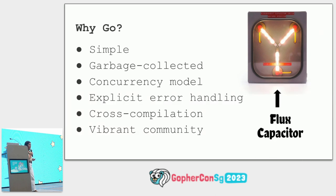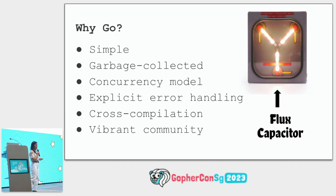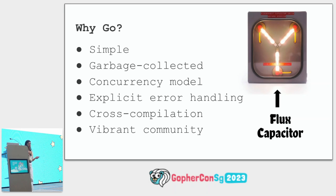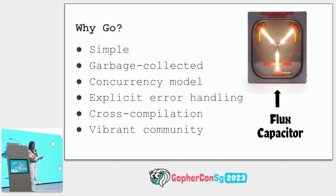Another reason to use Go is that it's a garbage-collected language, which means one less thing to worry about — you don't necessarily need to worry about memory management. Also, the concurrency model is very simple compared to other languages; a lot of complexity is abstracted out with goroutines and channels. There's also explicit error handling — the way the language is designed, errors are not meant to be ignored. Unlike other languages where you need try-catch blocks, Go is designed for you to explicitly handle errors. Cross-compilation is also very easy to configure for different platforms and architectures.